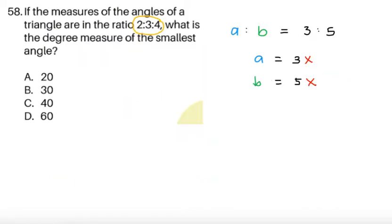Item 58: If the measures of the angles of a triangle are in the ratio 2 is to 3 is to 4, what is the degree measure of the smallest angle? Now one key takeaway is to use this trick. So we have a is to b, for example 3 is to 5. We can let a to be 3x for some value of x, it doesn't really matter, and b to be 5x. So we don't know what x is yet, but we'll be able to represent them in a way so that at least we only have to deal with one variable instead of 2.